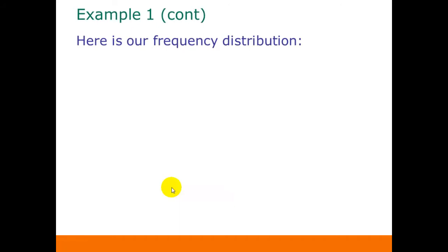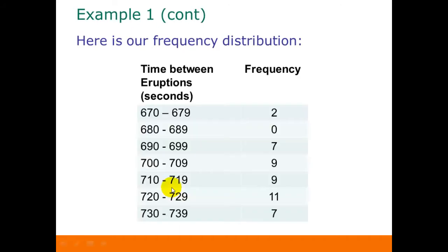Once we have all of our classes determined, we can go through our data and find the frequency for each class, just like we did with qualitative data. So this is our completed frequency distribution.